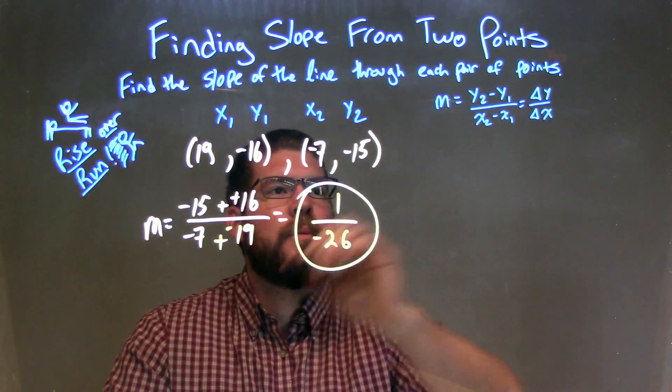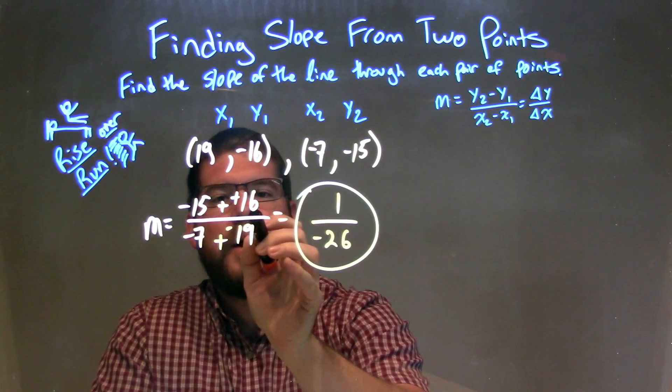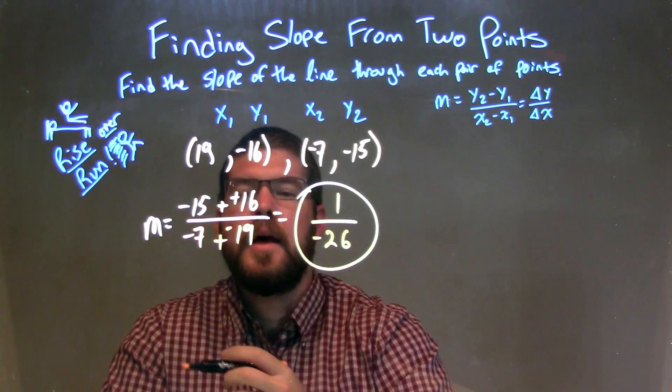I then followed my slope formula, which is Y2 minus Y1 over X2 minus X1, and then I simplified.